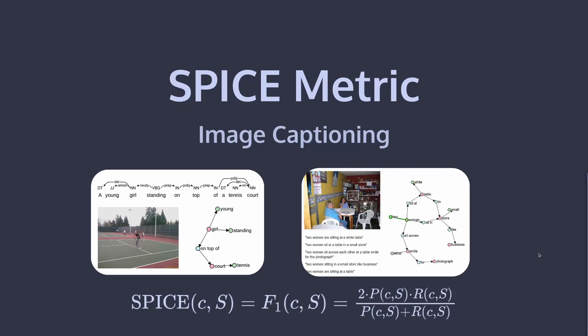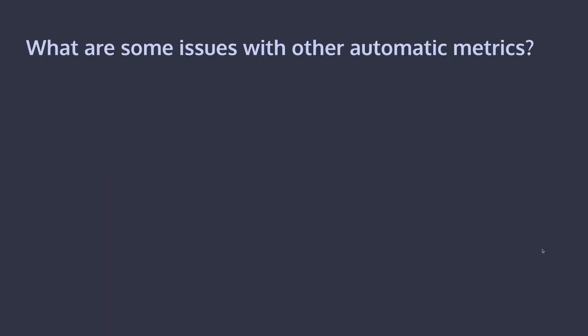Hey everyone, welcome back to another video. Today we'll be covering the SPICE metric for image captioning. The first question is obviously: what are some issues with other automatic metrics used for image captioning, and why do we need this new metric called SPICE?